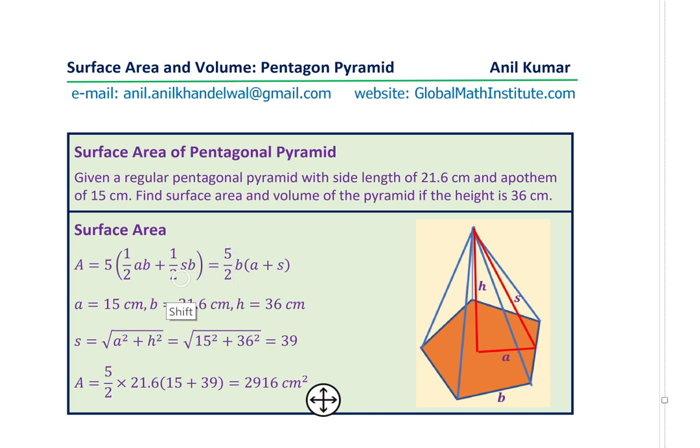Taking five over two B common, we could write this formula as five over two B into A plus S. Now we know that the value of A is 15 centimeters, B is 21.6 centimeters, and height H is 36 centimeters.